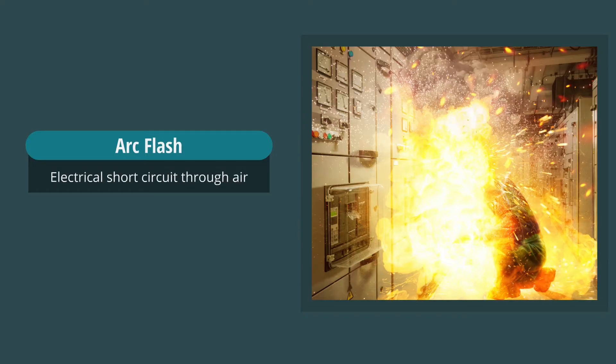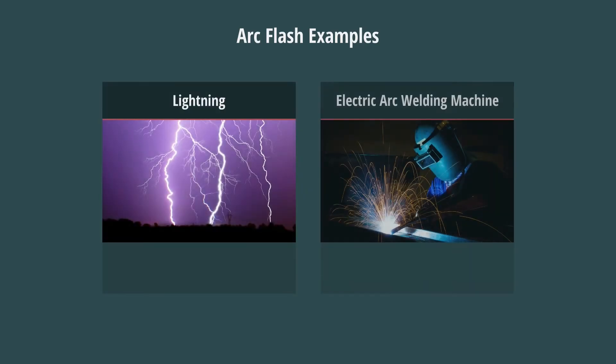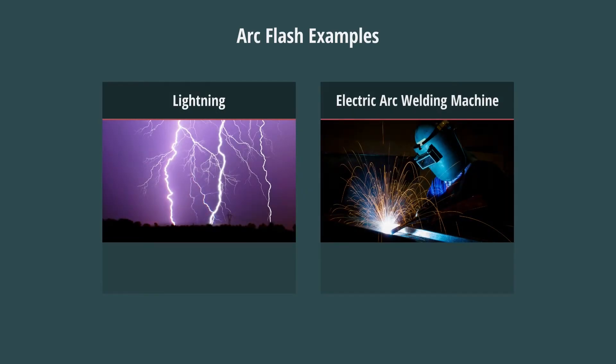An arc flash is, very simply, an electrical short circuit through air. Whether it occurs from phase to ground or phase to phase doesn't matter. What does matter is that enough energy is present to perpetuate the arc. Lightning and an electric arc welding machine are both examples of an arc flash.